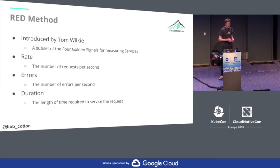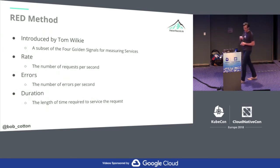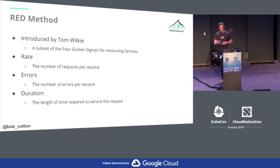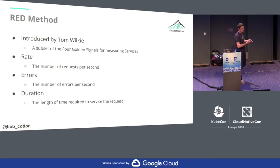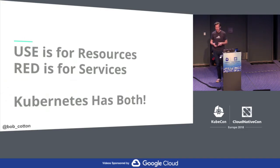The next thing is the RED method. Tom Willicke from Causal, now Grafana Labs, coined this as a spin on the USE method. Why do we need another method? It's because of the other three metrics of the four golden signals. We have Rate, Errors, and Duration — apply these to your services, the software that runs on your cluster. I don't need to talk about how saturated my service is, because my hardware gets saturated. But I do want to know the incoming request rate for my service and the duration it takes to respond. Kubernetes has both of these, and we'll apply these methods to some of the metrics.